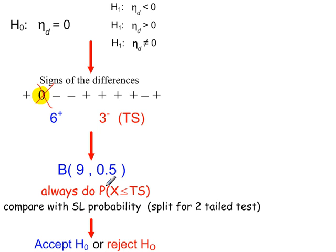And if the probability that you've looked up is less than your significance level probability, then you reject H0. If the probability you've looked up is more than your significance level probability, then you accept H0. And the following two examples will demonstrate this.